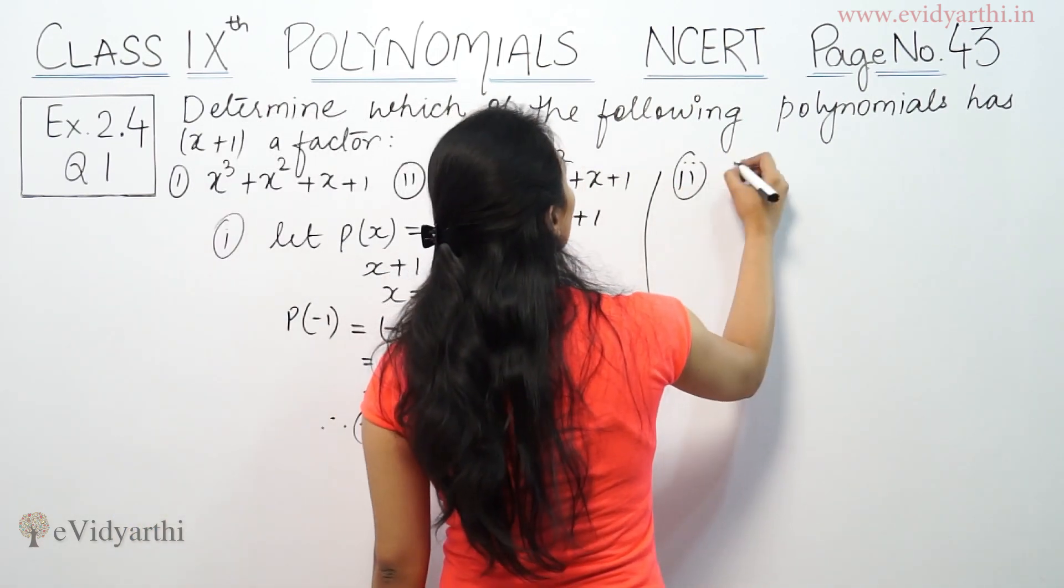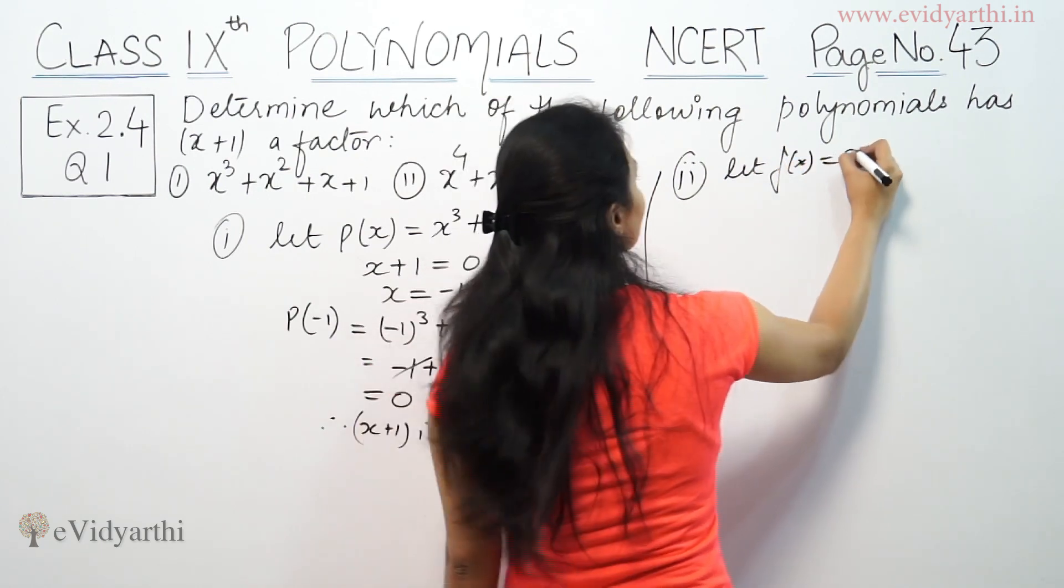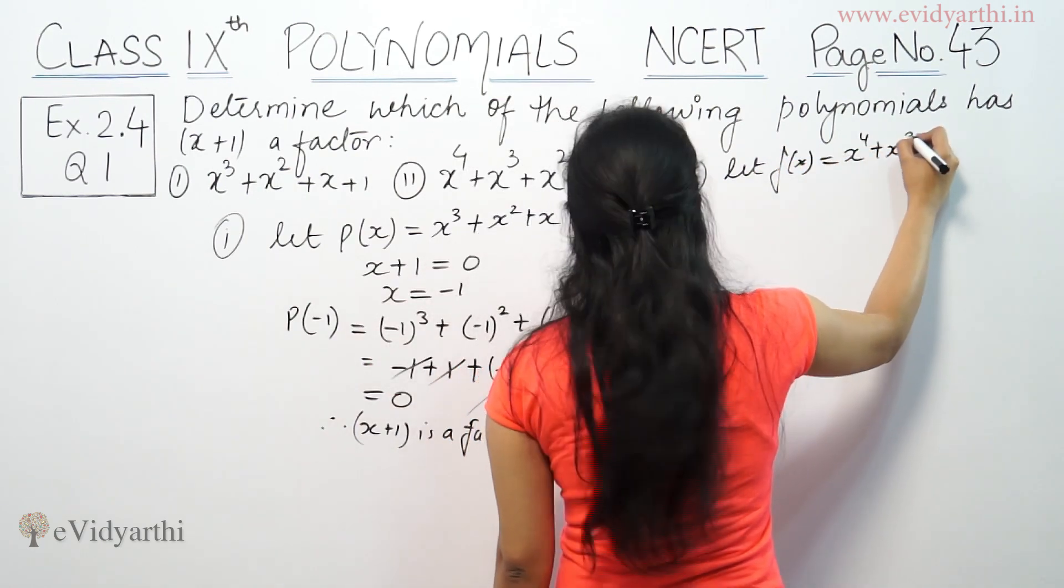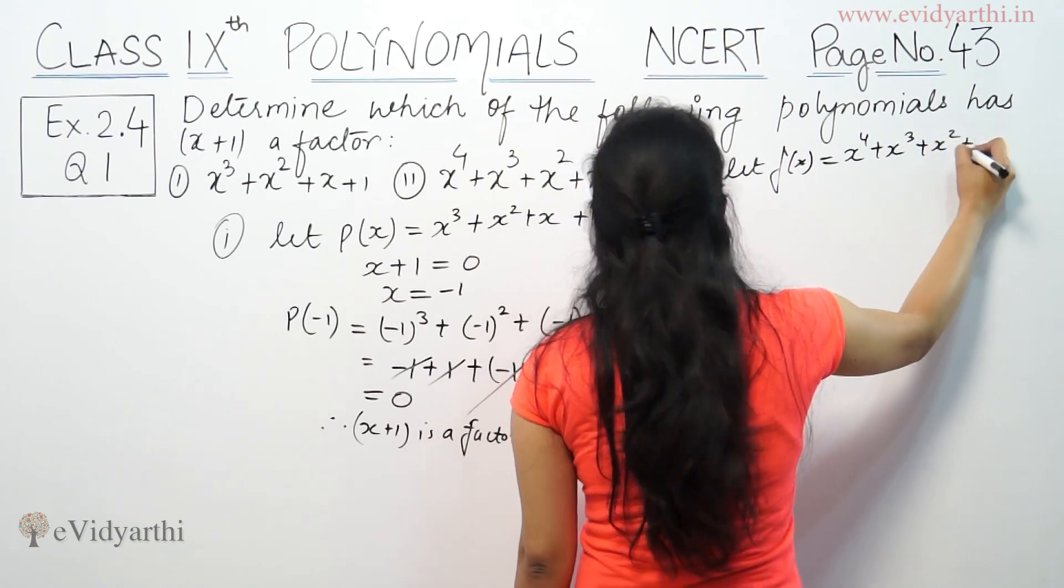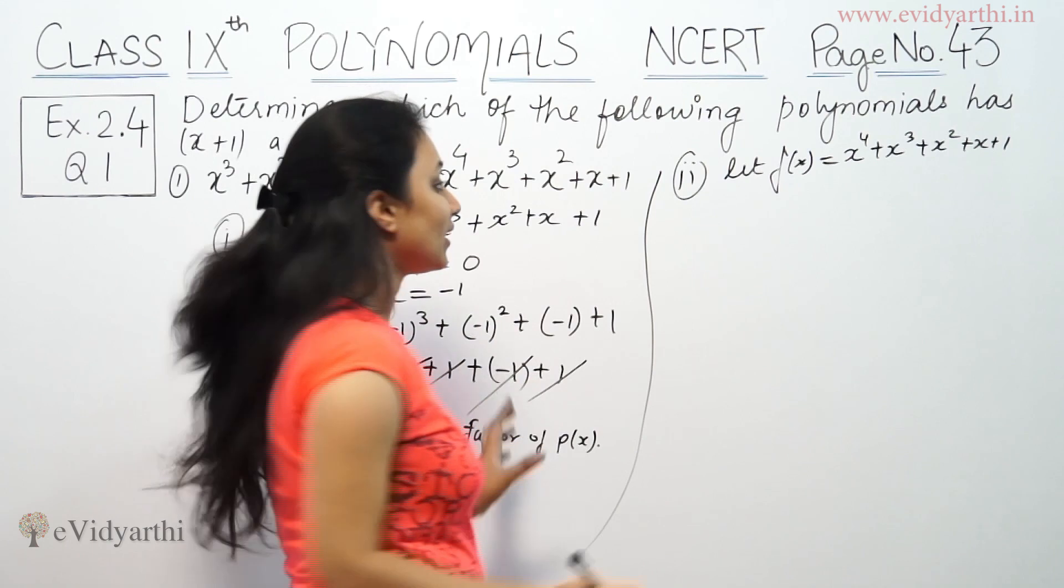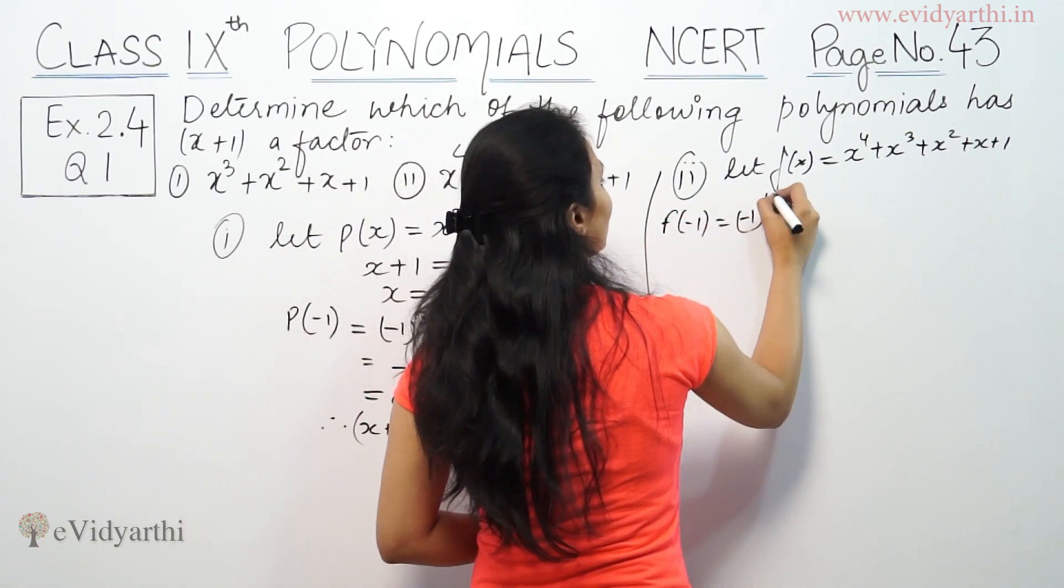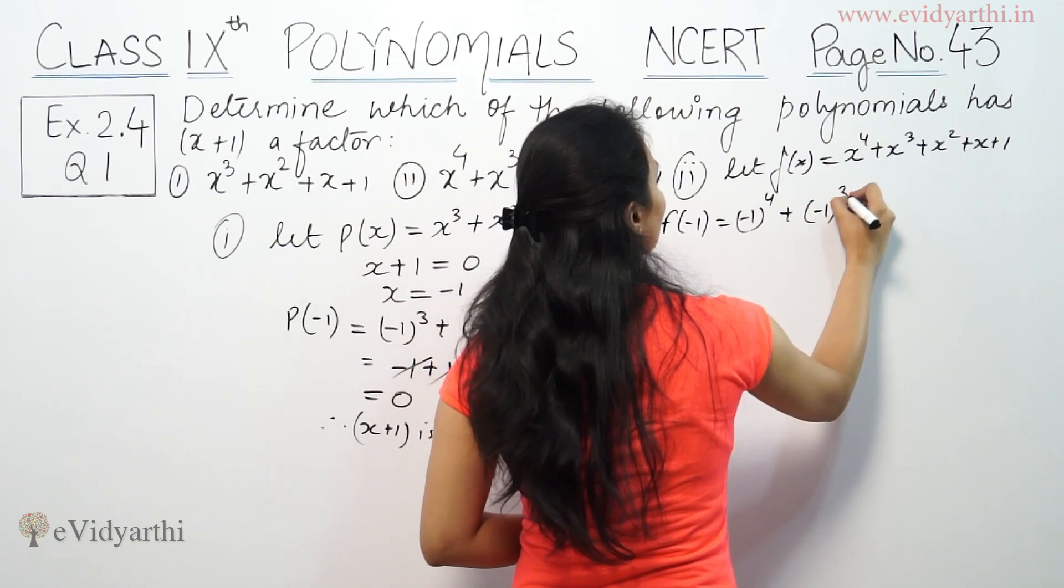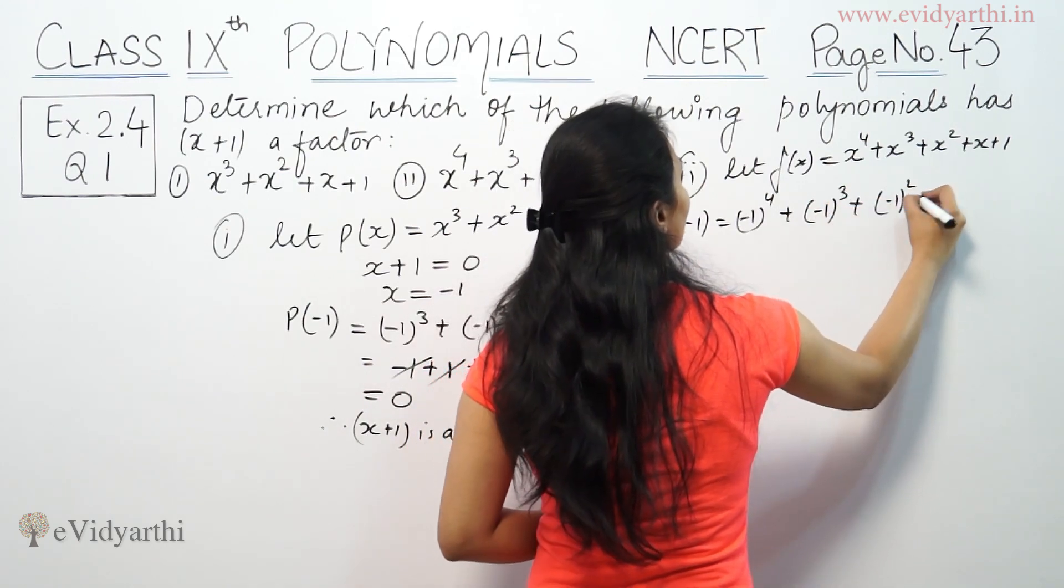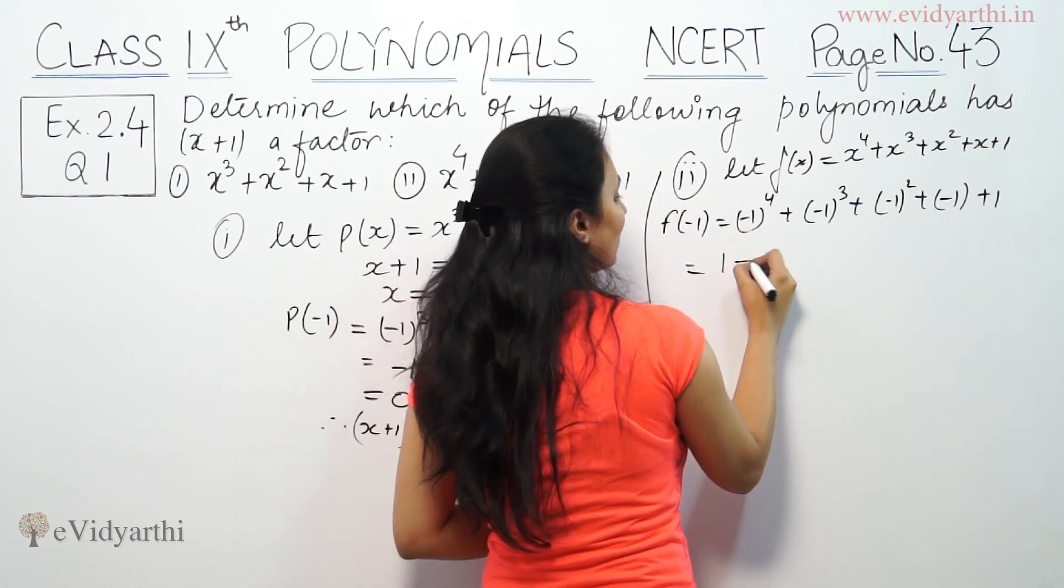Second polynomial, let's call this f(x). We are given x⁴ plus x³ plus x² plus x plus 1. Again, substituting x equals minus 1: f of minus 1 equals minus 1 to the power 4, minus 1 cubed, minus 1 squared, minus 1, plus 1.